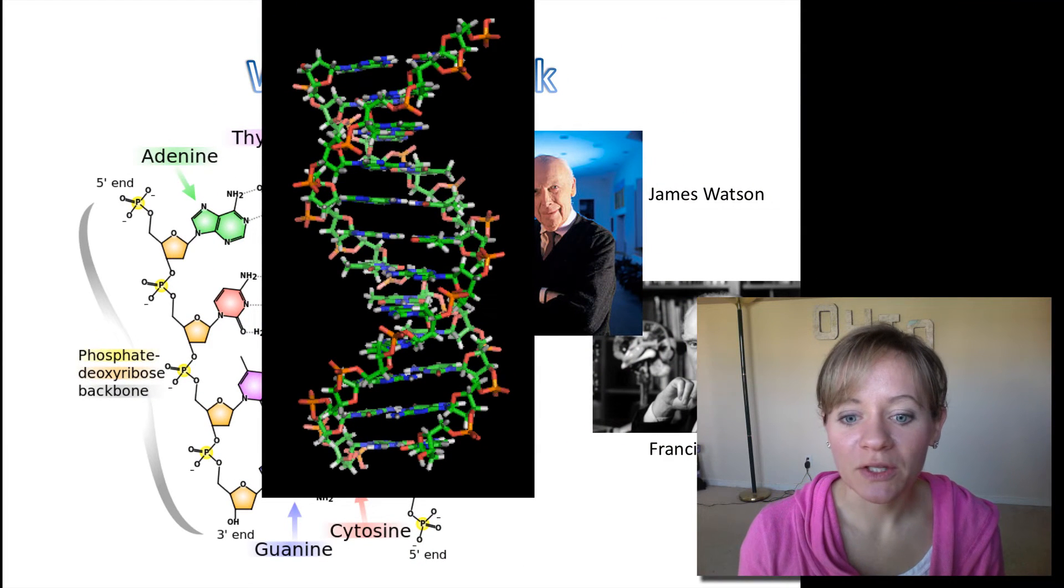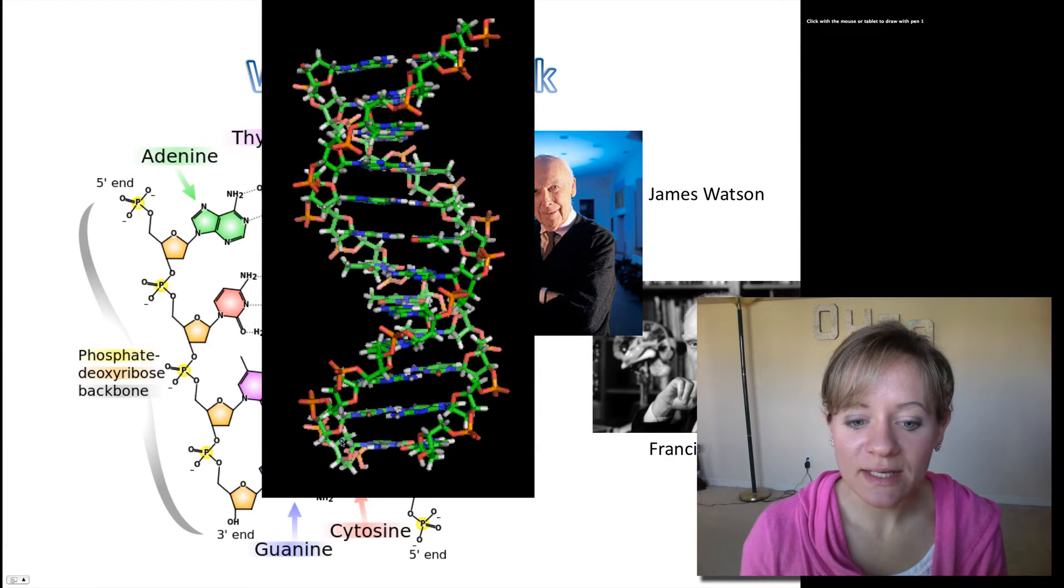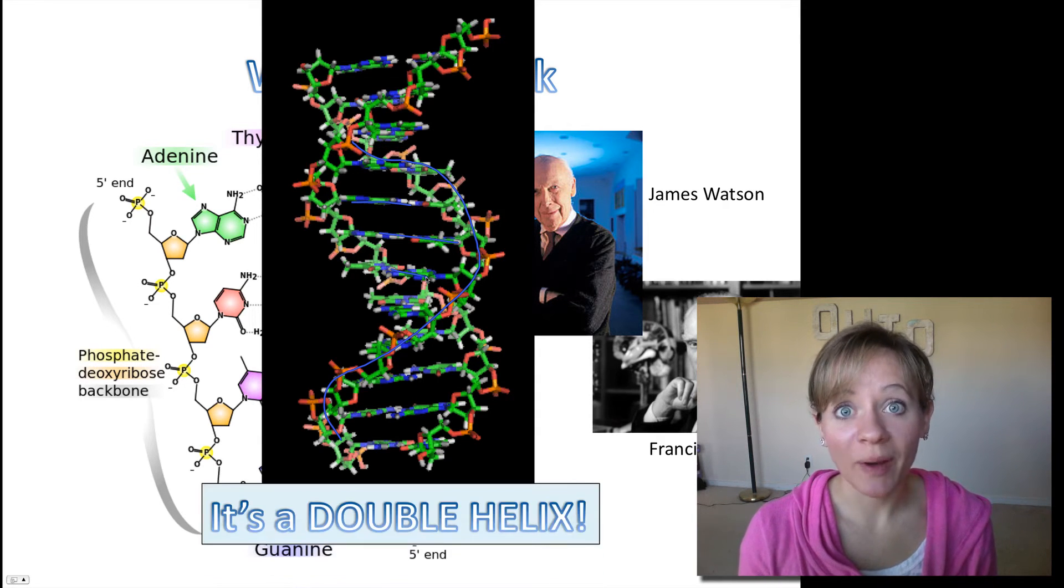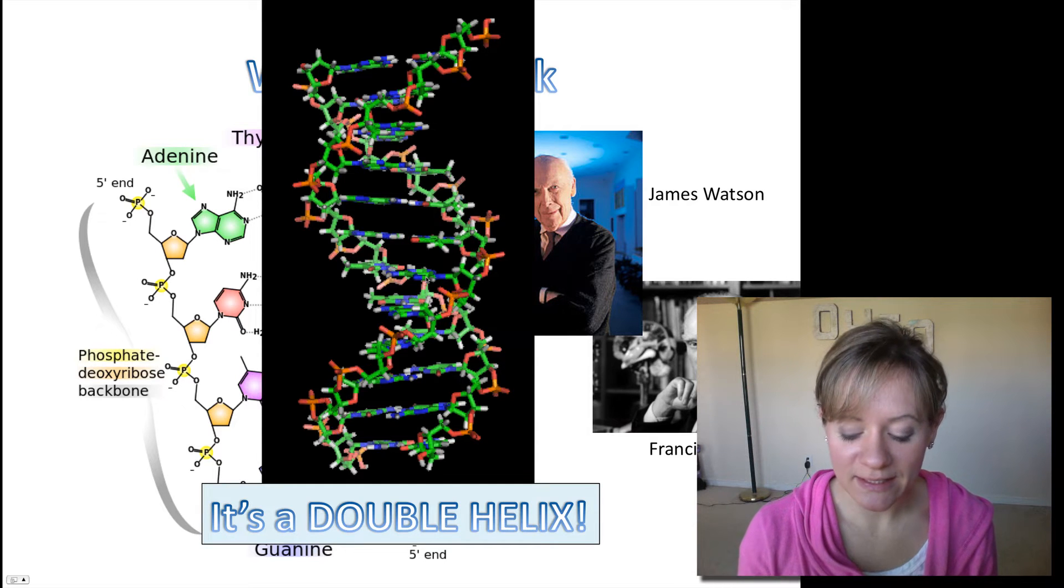So that's what the double helix looks like. The backbone is the sugar phosphate backbone, and then in the middle there, those are our nitrogenous bases that are held together by hydrogen bonds.